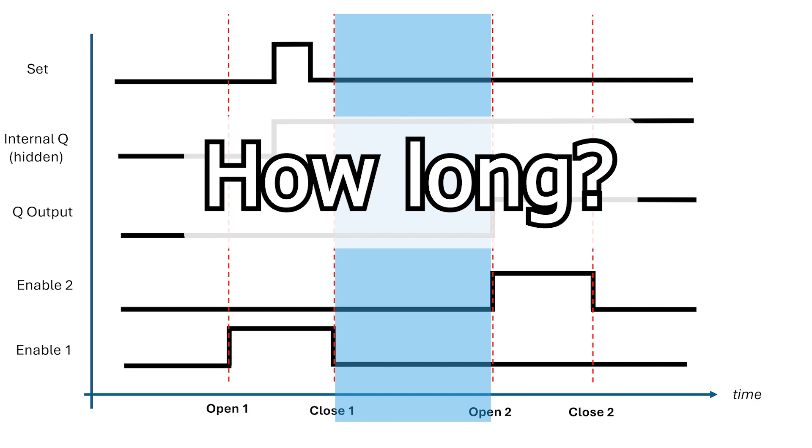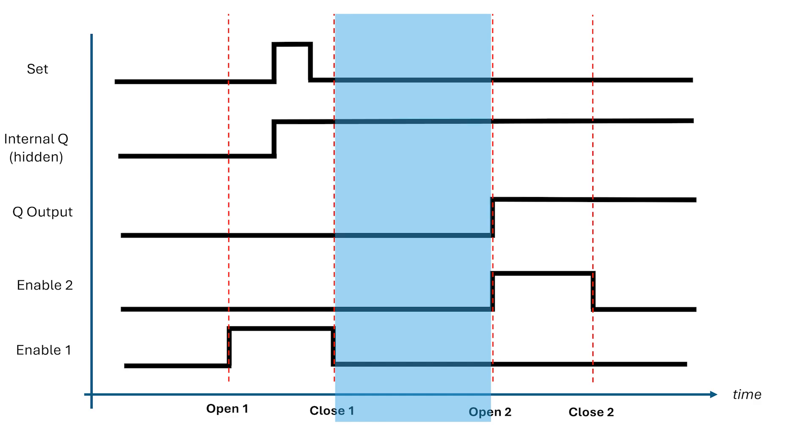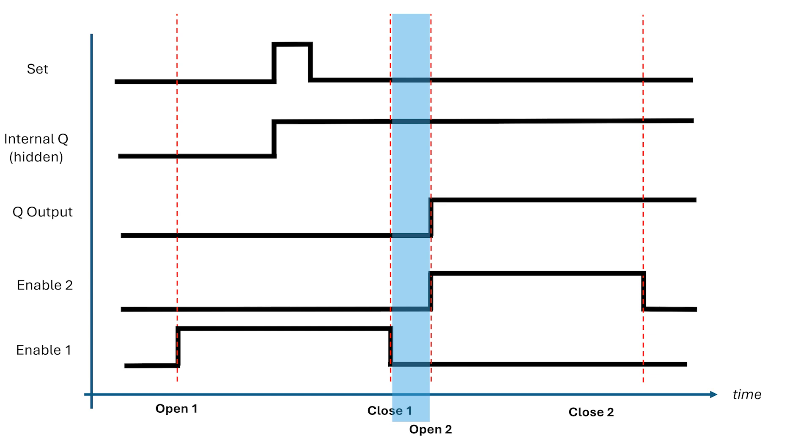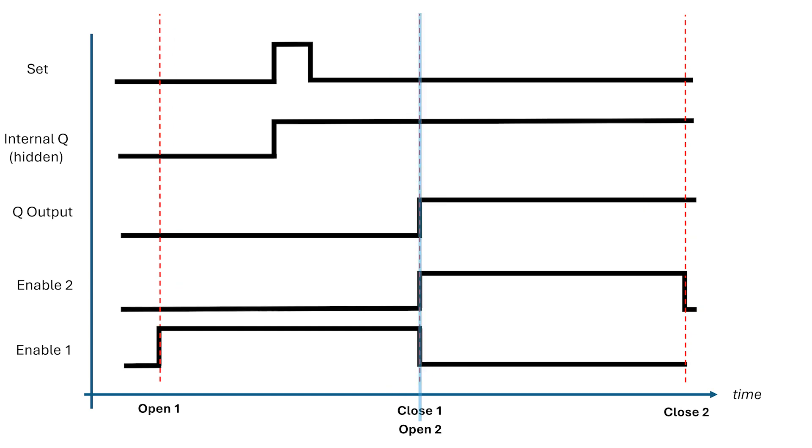So, how long does this blue period between the two enables need to be? In an electronic circuit, electrons travel much faster than Mark Watney, so we can keep shrinking this time. In fact, it turns out, we can shrink this blue period until it's infinitesimally small. Indeed, if you look carefully, we can make enable 2 the inverted form of enable 1.